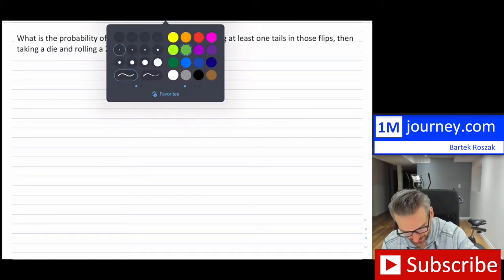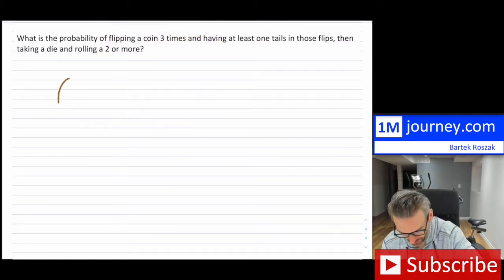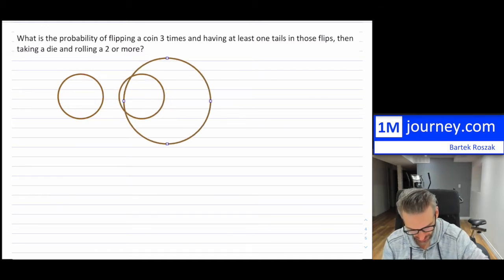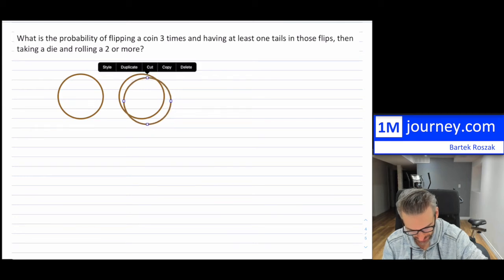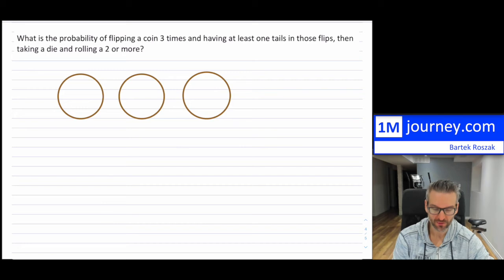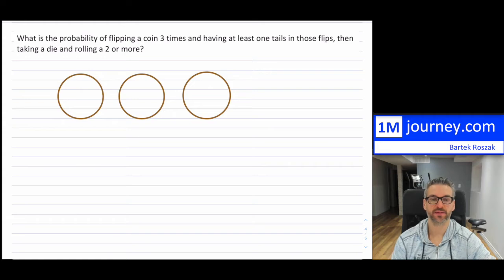So what we have is we have some coin. Let's say we have one, two, and three. So we have three coins or at least three flips of a coin. Now it says we wanna try to get at least one tails in these.